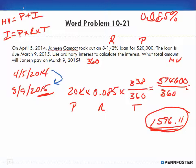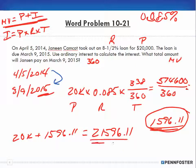Now we want to know what the maturity value is. The maturity value is the principal of $20,000 plus the interest of $1,596.11, and so that means the maturity value is $21,596.11.